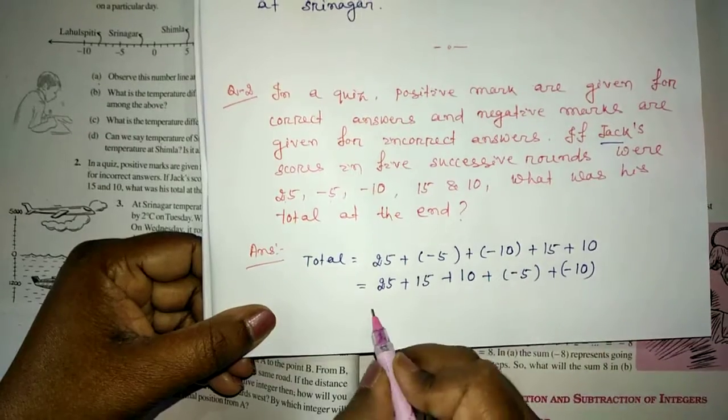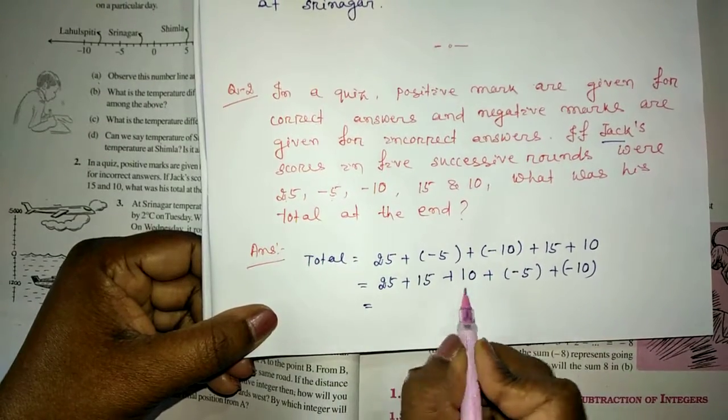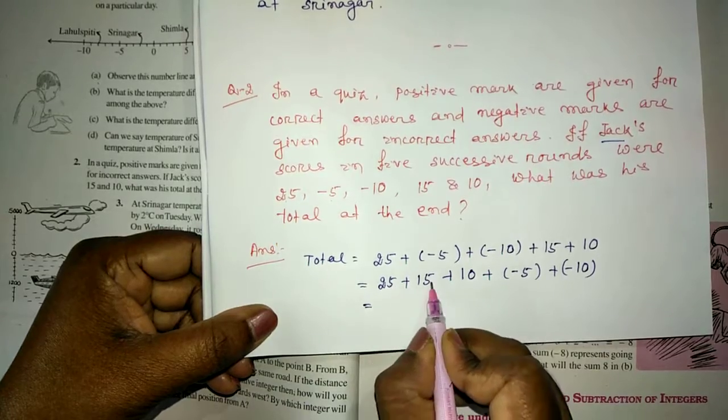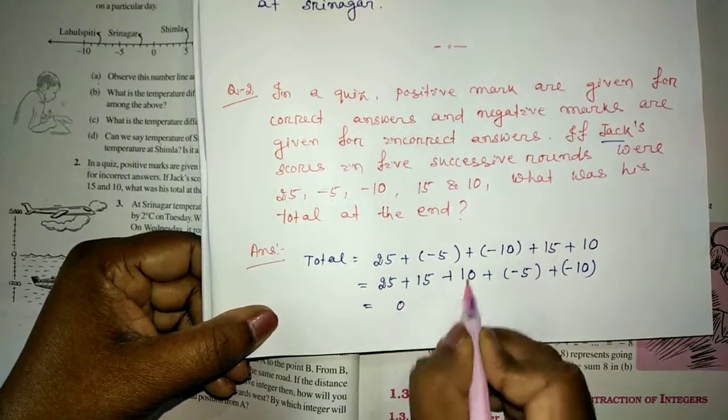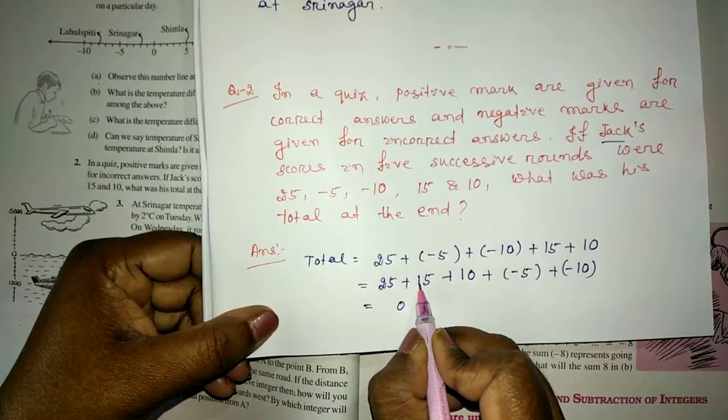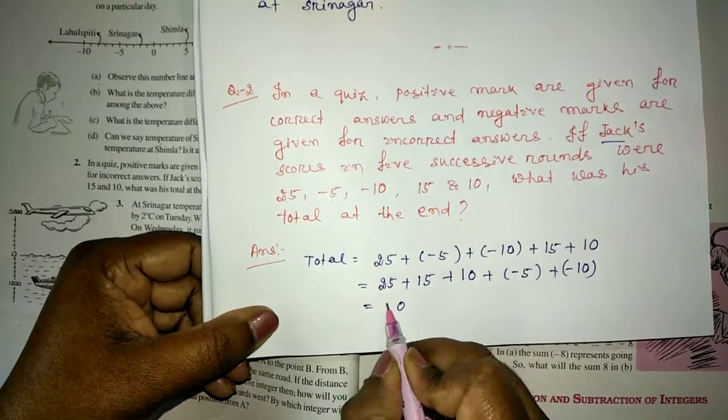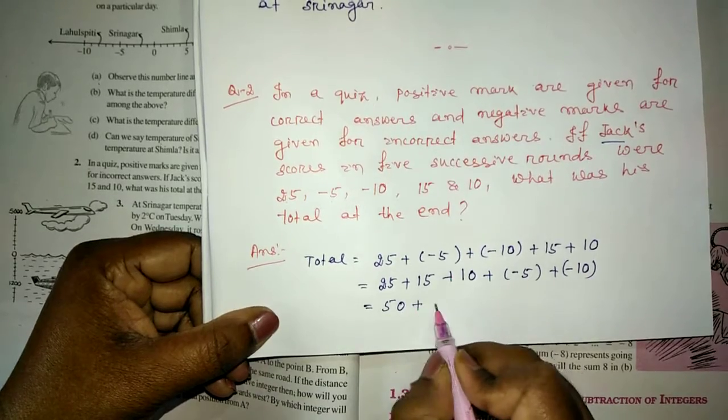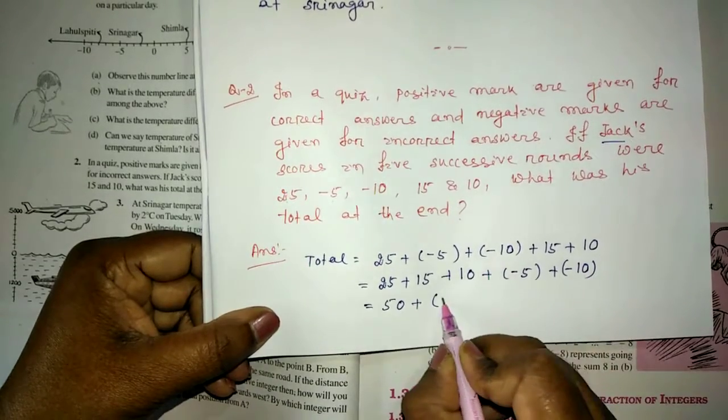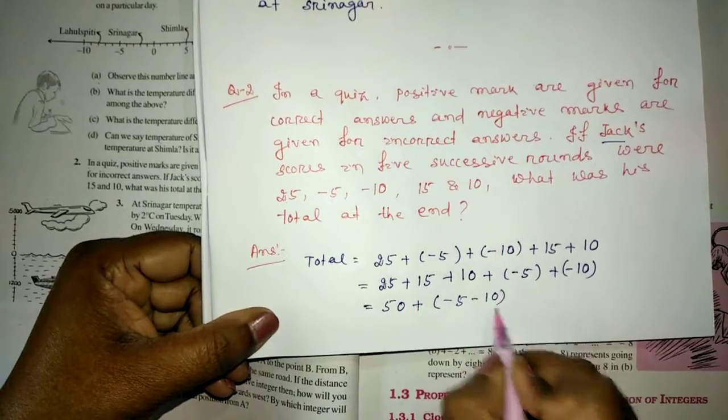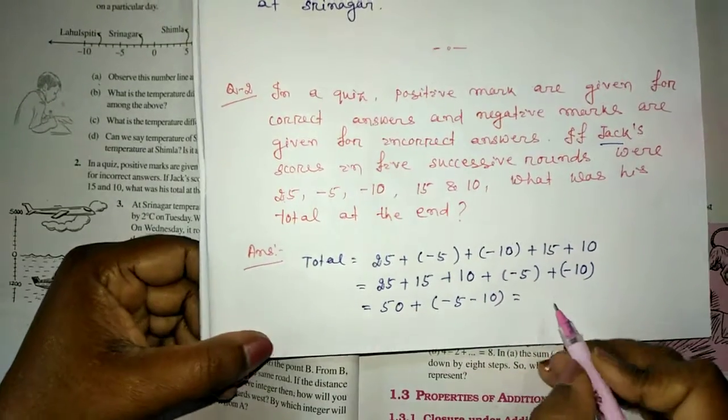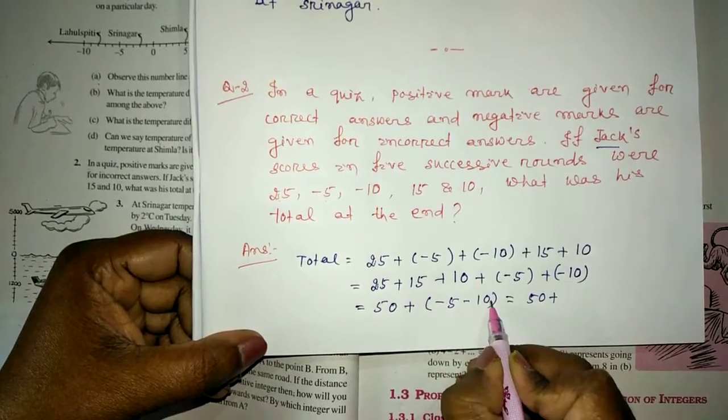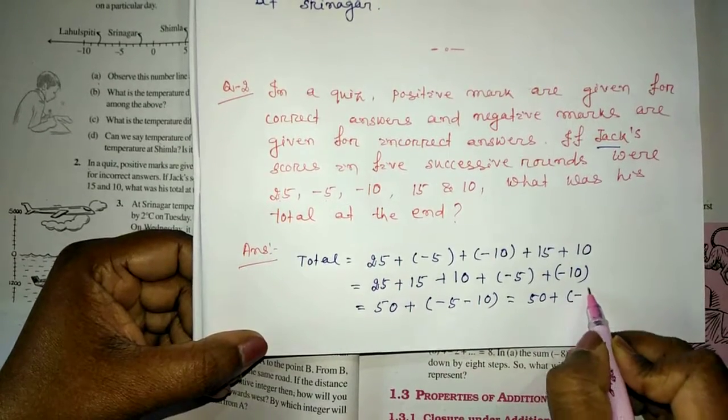We will keep it in a bracket. Then first add the positive integers. Positive integers, here 5 plus 5 equal to 10. 10, 1, 1, 2, 2, 2, 4, this is 5. Plus here, minus 5 minus 10, this will be 15. This will be 50 plus minus minus, it will be plus, that is minus 15.